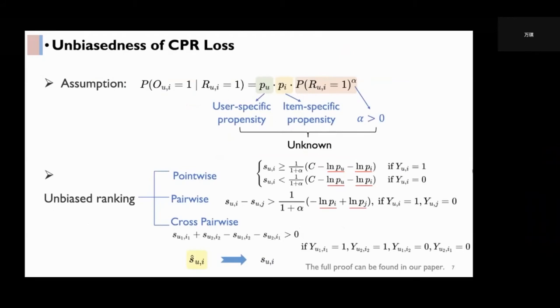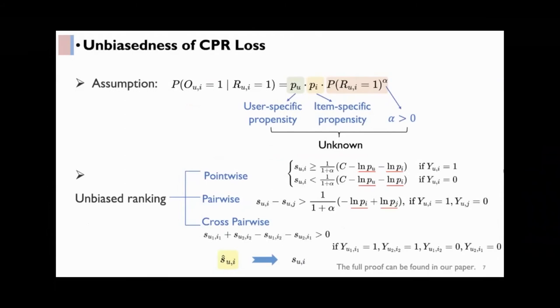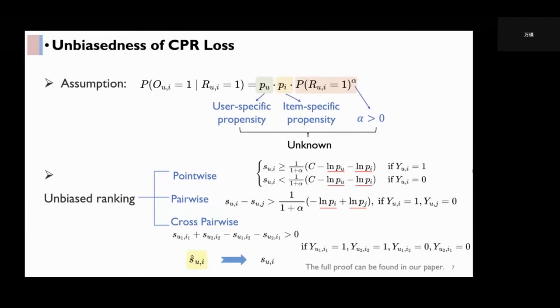To demonstrate its unbiasedness, we first make a mild assumption on the exposure probability. We assume that it can be factorized into three terms: user-specific propensity, item-specific propensity, and a power function of the user-item relevance.